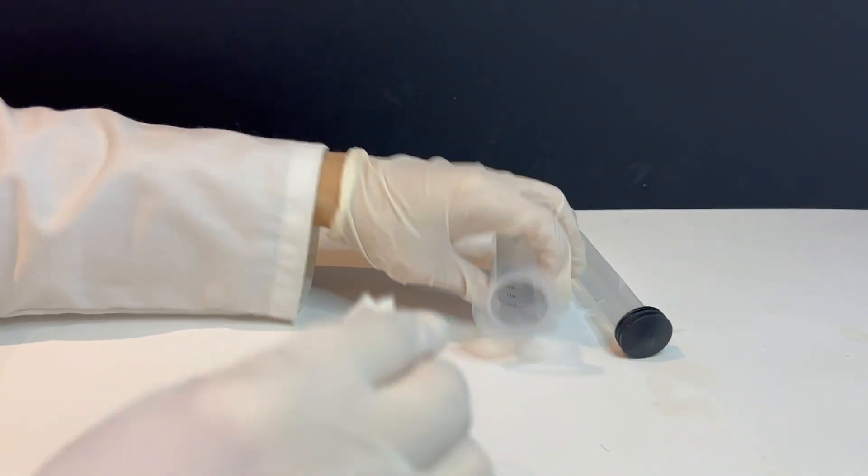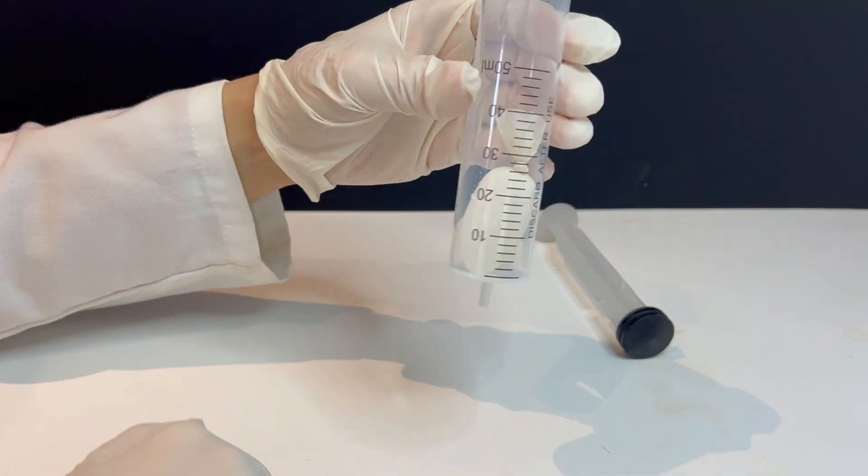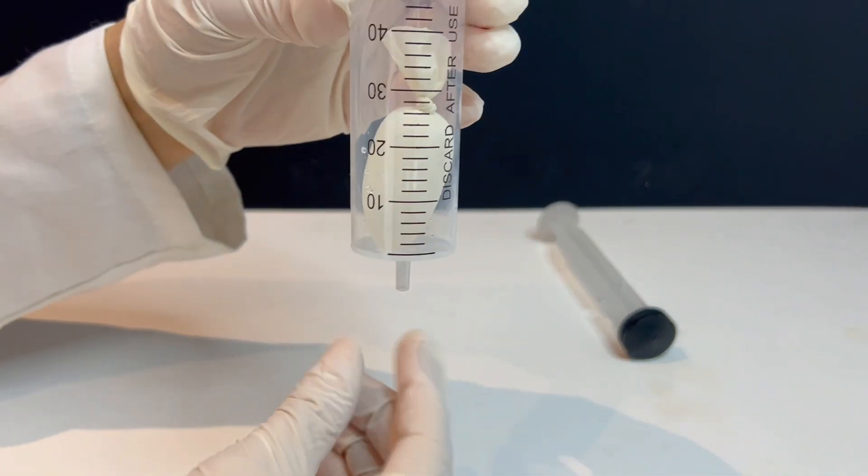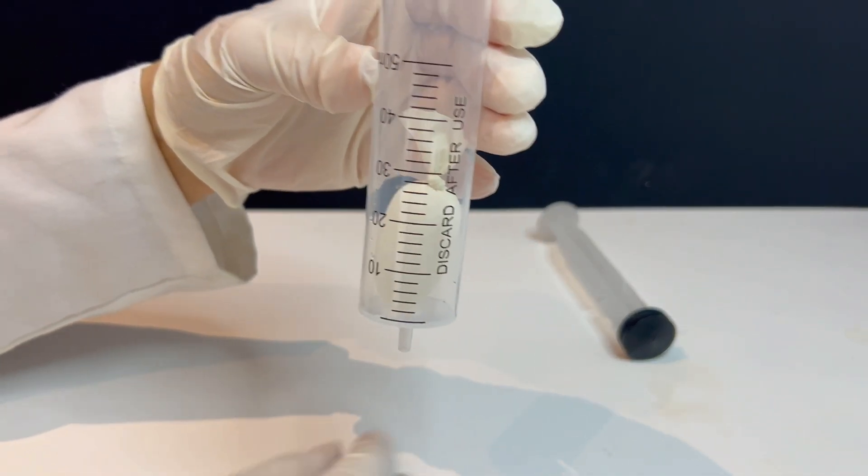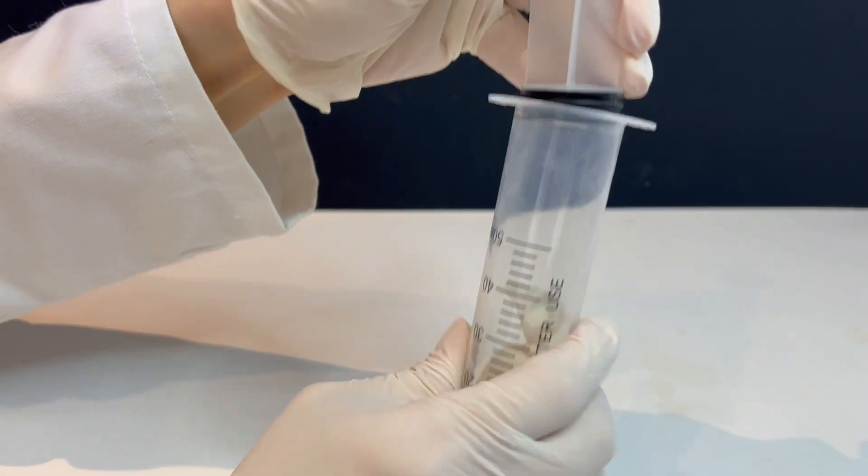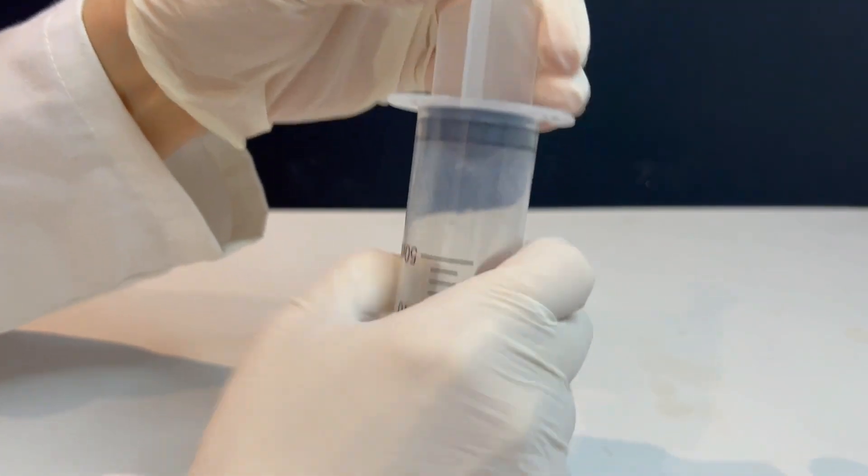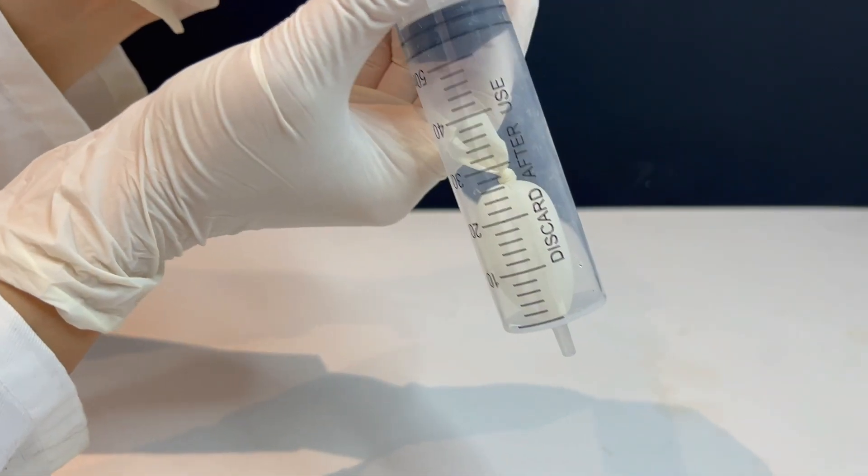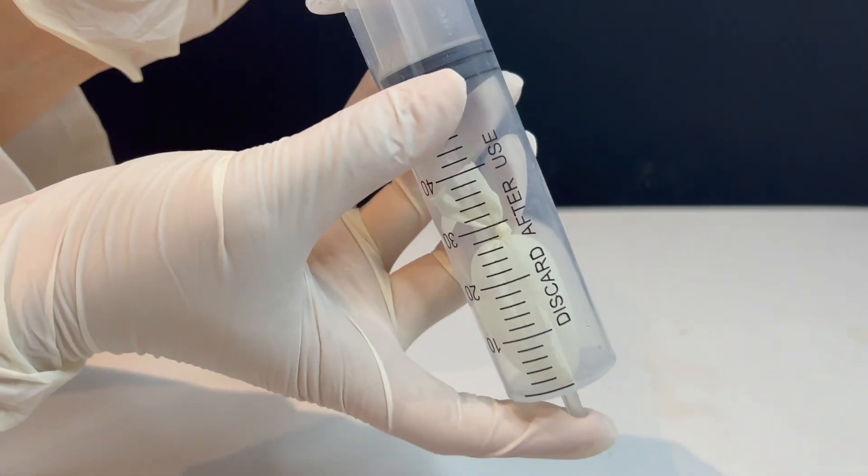Now, I will place the balloon or the piece of latex glove inside the syringe so that it goes all the way down to the opening. Then, I insert the plunger and cover the opening of the syringe with my finger so that it becomes a closed system, which means no air can enter or leave.